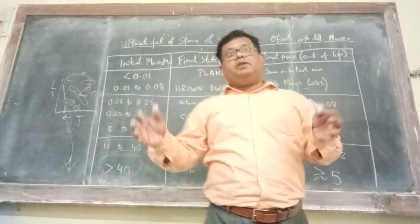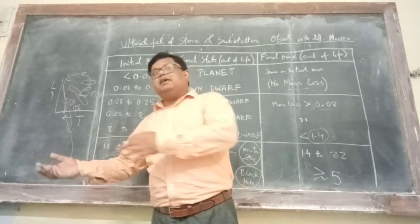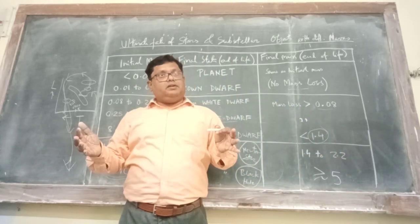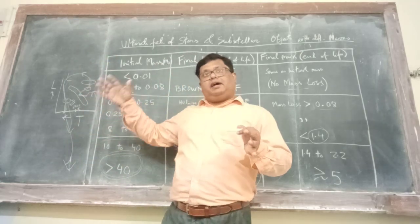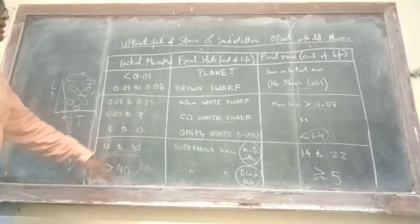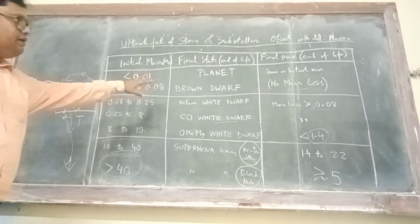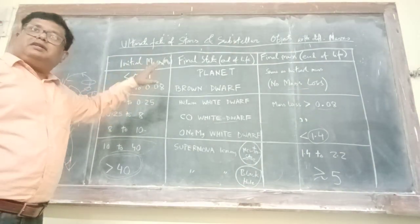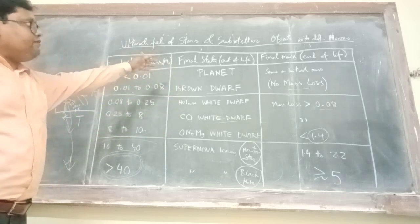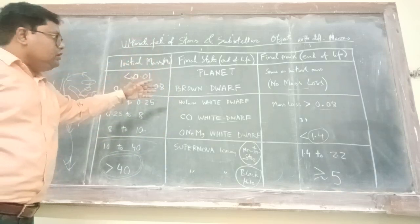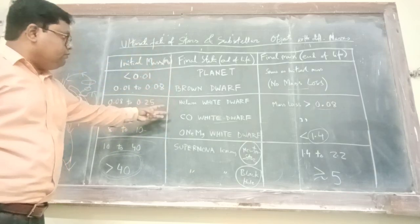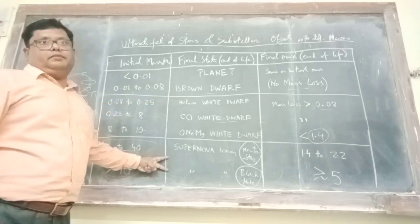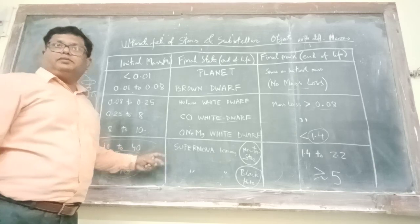So this is very important, this chart. Because normally we say there is this formation, some mass loss is there. So how much mass loss is there, a relative comparison I have done for all the various scenarios. You will find that there are roughly 7 such scenarios. Starting from planet, brown dwarf, helium, three types of white dwarf, and neutron star, and black hole.